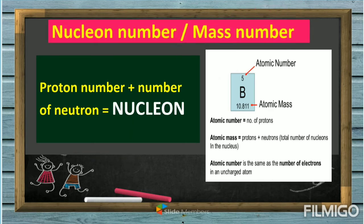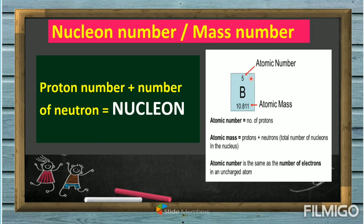The nucleon number is also known as the mass number. Proton number plus number of neutrons equals the nucleon number. The atomic mass is the number of protons plus neutrons, representing the total number of nucleons in the nucleus. The atomic number is the number of protons — and in an uncharged atom, it also equals the number of electrons.